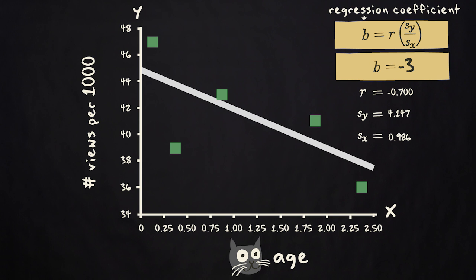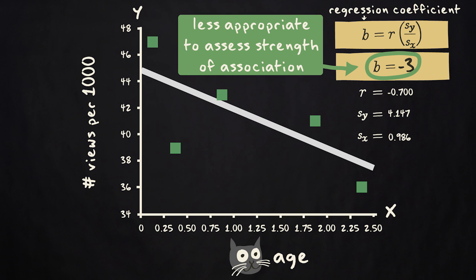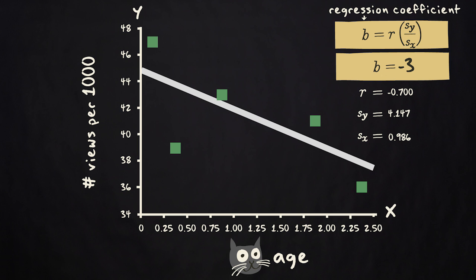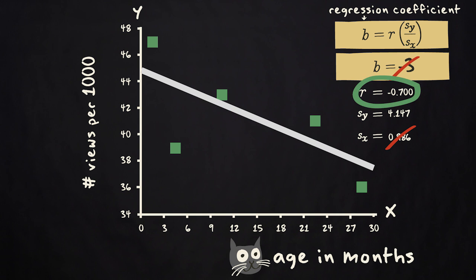In contrast to the correlation, its unstandardized version, the regression coefficient, is less appropriate to assess strength of association. This is because the size of the regression coefficient depends on the often arbitrary choice of scale for the predictor and response variable. In our example, the regression coefficient tells you how much the predicted popularity score will go down if cat age increases with one unit, in this case, one year. If we change the age scale from years to months, the regression coefficient will change accordingly, while the correlation stays the same.